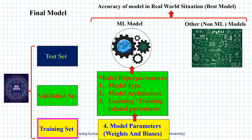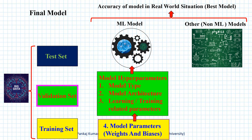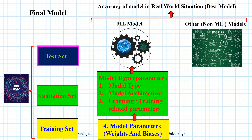The training set is used to train the model, or learn the model parameters like weights and biases in the case of a neural network. The validation set is used to decide optimal values of model hyperparameters — that is, model type, model architecture, and learning or training related parameters.